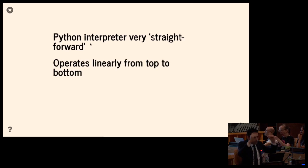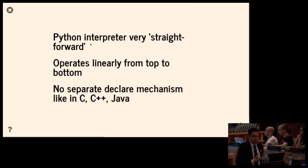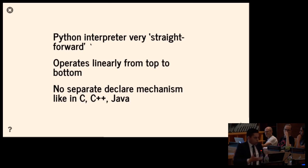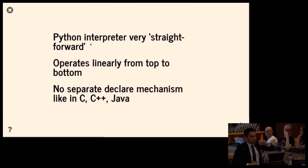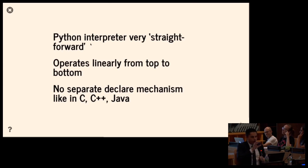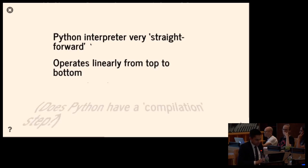The Python interpreter operates linearly from top to bottom. It doesn't have a separate definition or declaration step as in C, C++, or Java. A def statement in Python just says: figure out the code under this, create a code object, create a function object, call it this name. What happens in a class body? It sees a class body, sees all the local variables that were created, and says these local variables are attributes on that class. That's it.